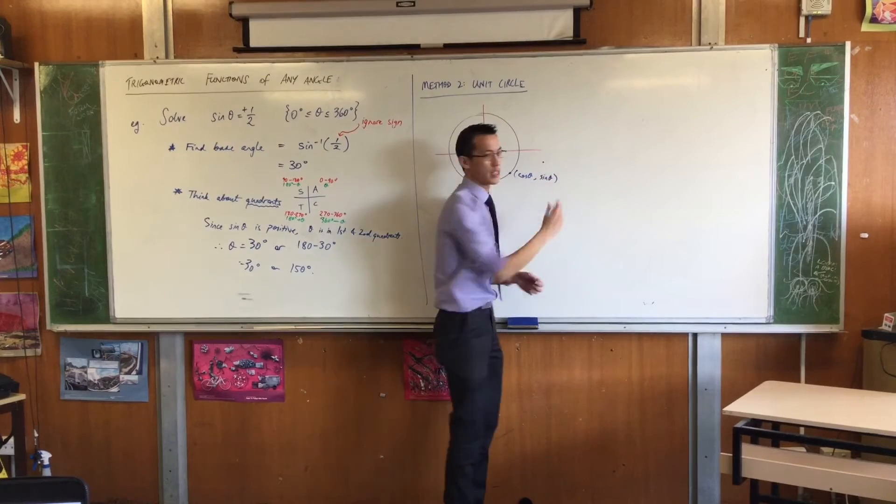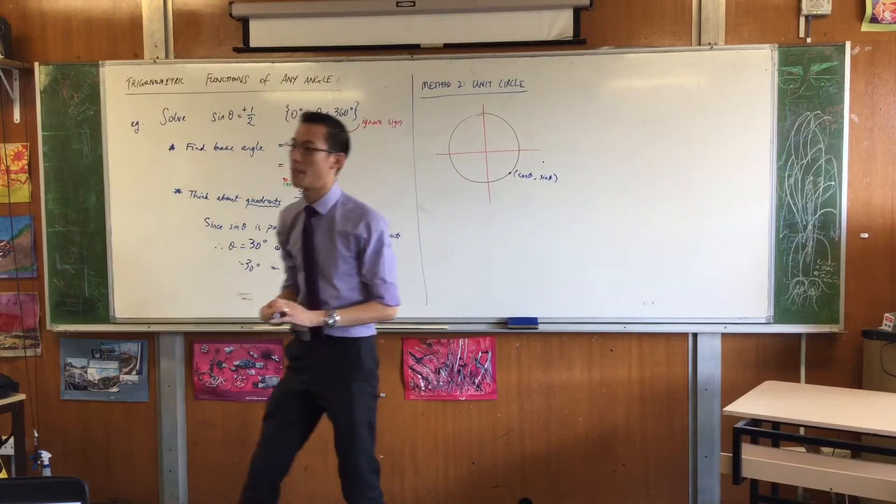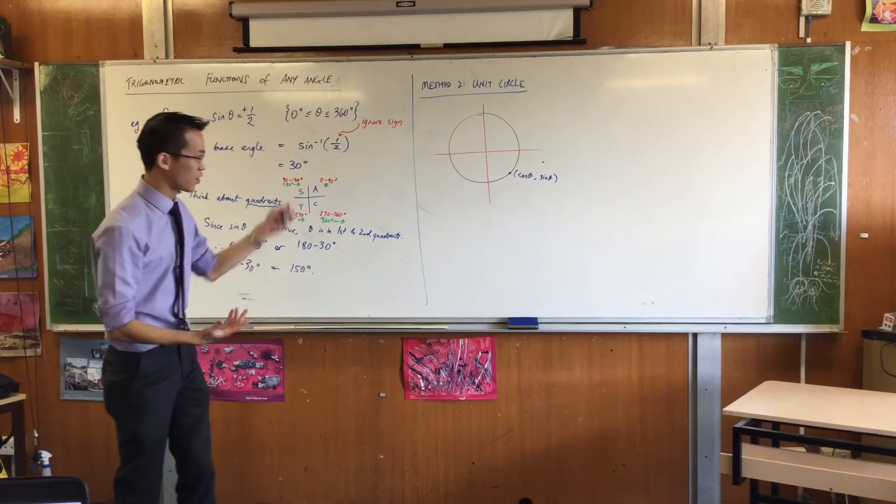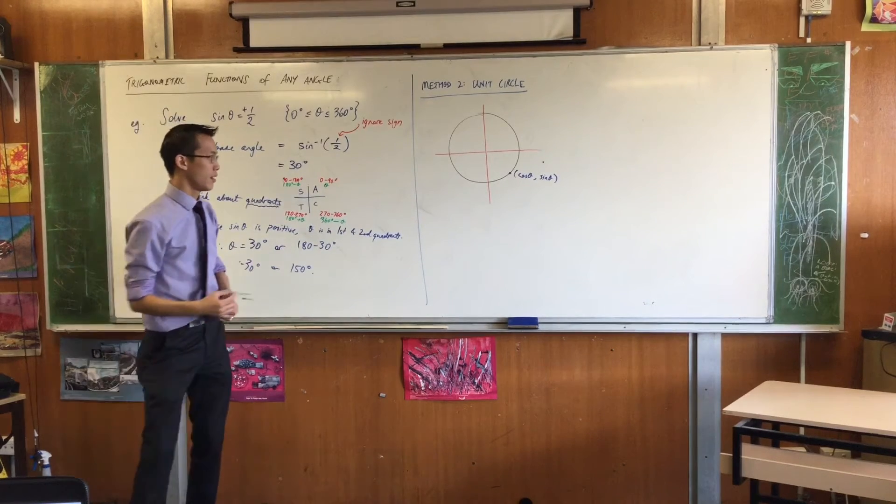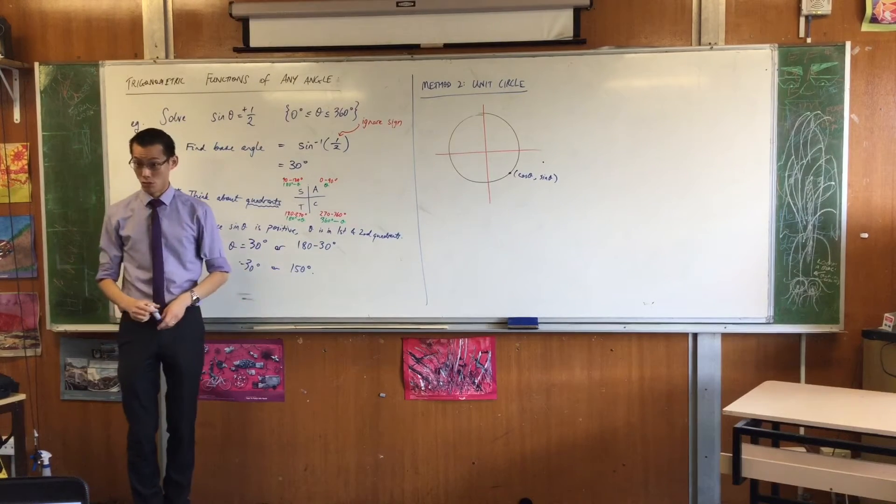Now, one of the easiest ways for you to remember that is that x and y are alphabetical. Conveniently, cos and sine are also alphabetical. Okay? So you might find that a nice easy memory device for you to use.